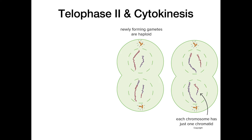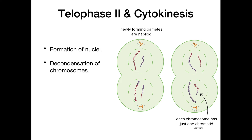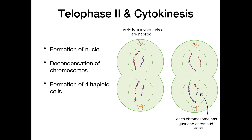Lastly, in telophase 2 and cytokinesis, we have the reformation of the nuclei and nuclear envelopes, and the decondensation of the chromosomes as they start to relax and unwind. The final product of meiosis is four haploid cells resulting from the completion of telophase 2 and cytokinesis.